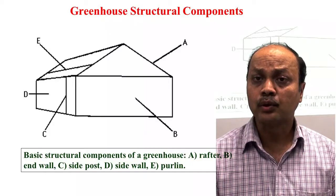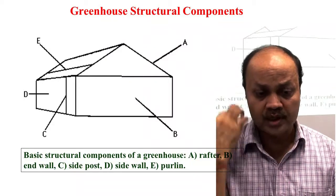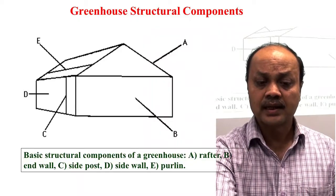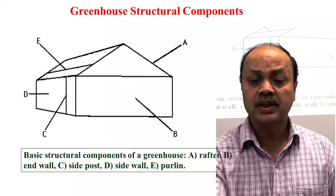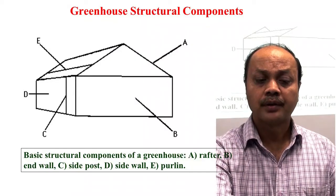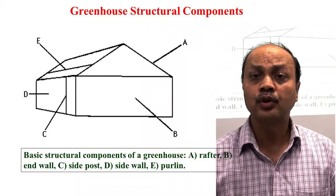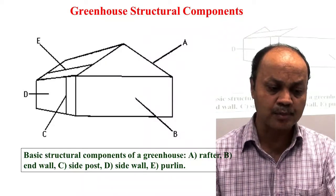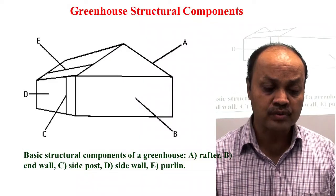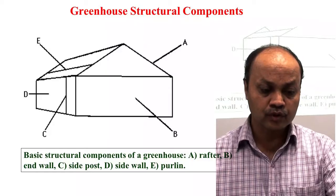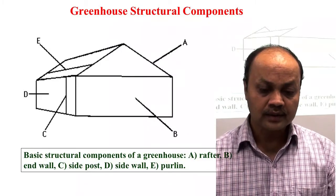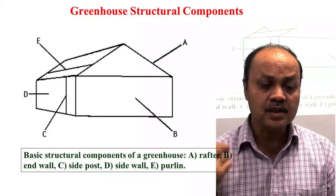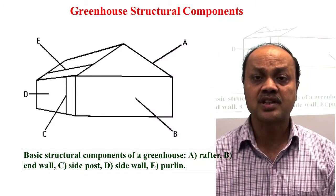Various greenhouse structural components are important to understand. In an even-span gable greenhouse: 'A' is the rafter — equal on both sides in an even-span greenhouse; 'B' is the end wall; 'C' is the side post used in construction; 'D' is the side wall; and 'E' is the purlin, which is the material running along the length of the greenhouse.